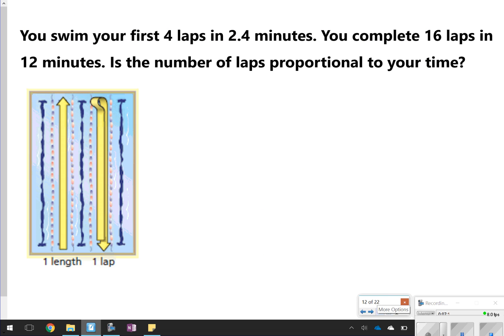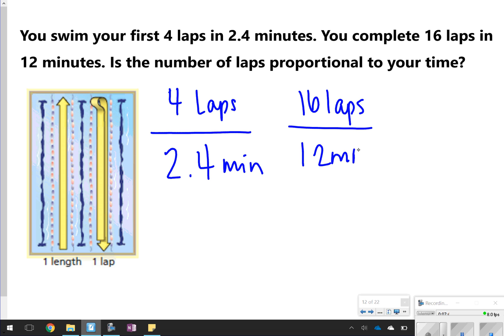Okay, so this one says you swim your first four laps, so four laps, in 2.4 minutes. What I'm going to essentially do here is write this as a rate. The other one says you complete 16 laps. So 16 laps in 12 minutes. Notice I set the rates up exactly the same, laps over minutes. It says, is the number of laps proportional to your time?